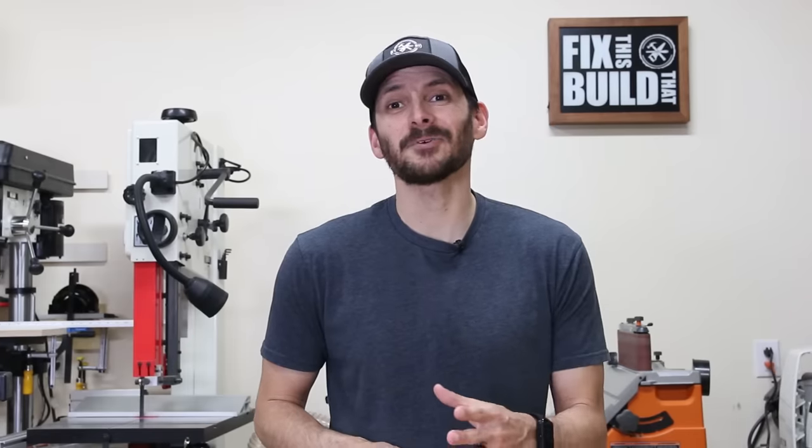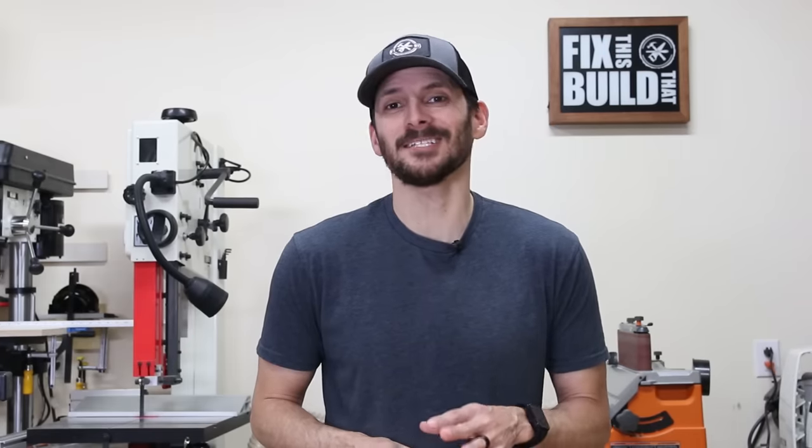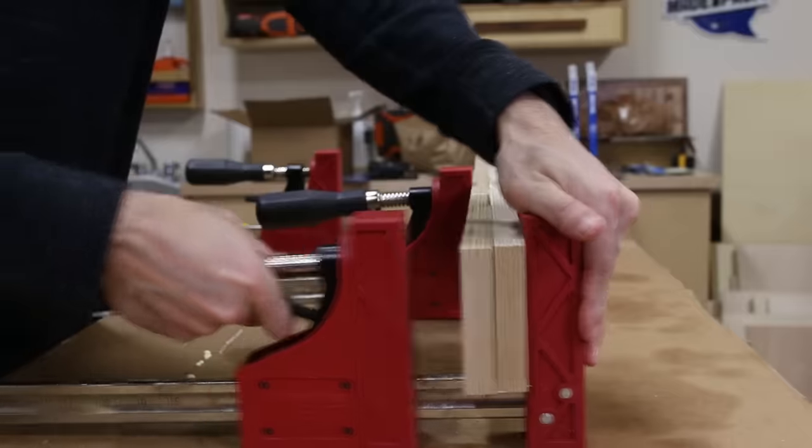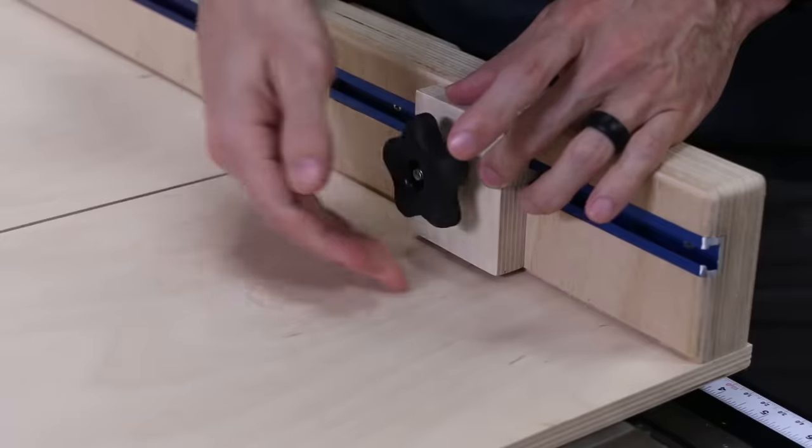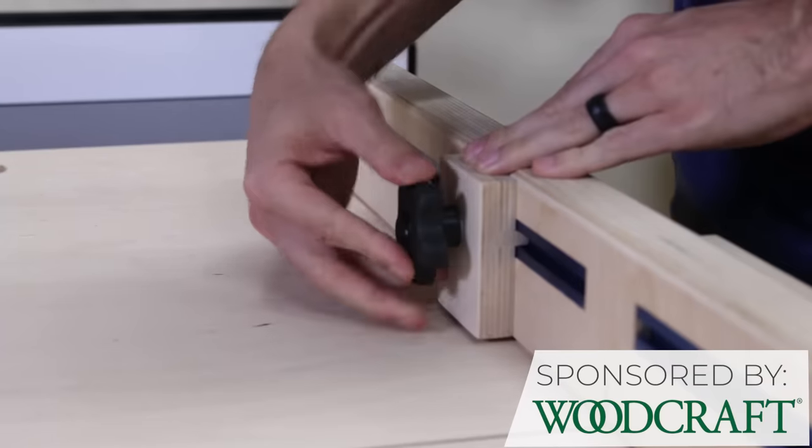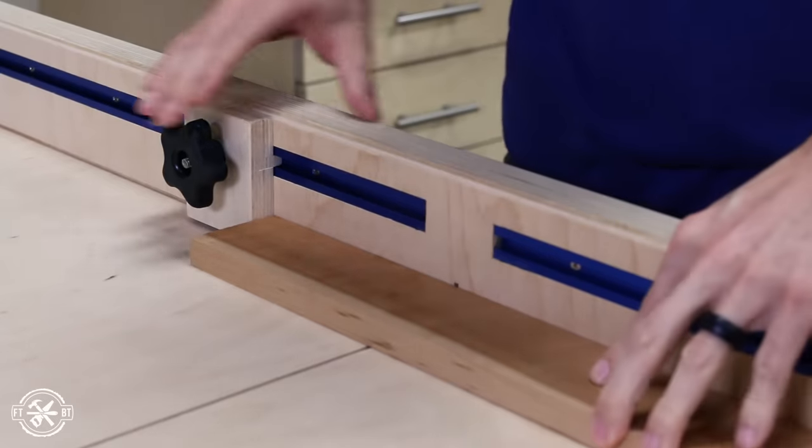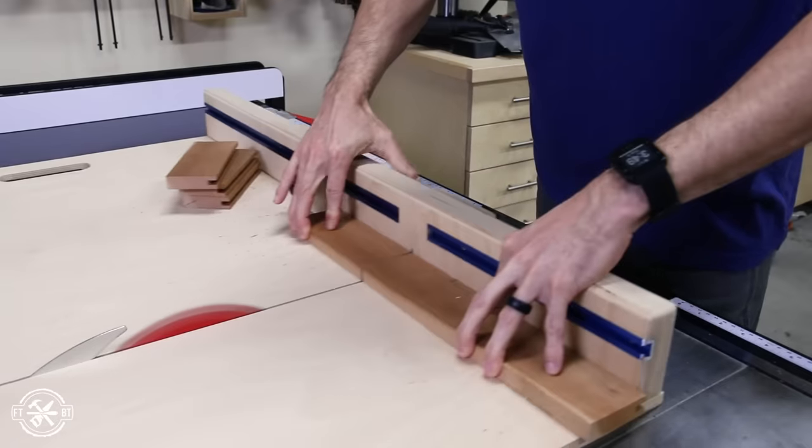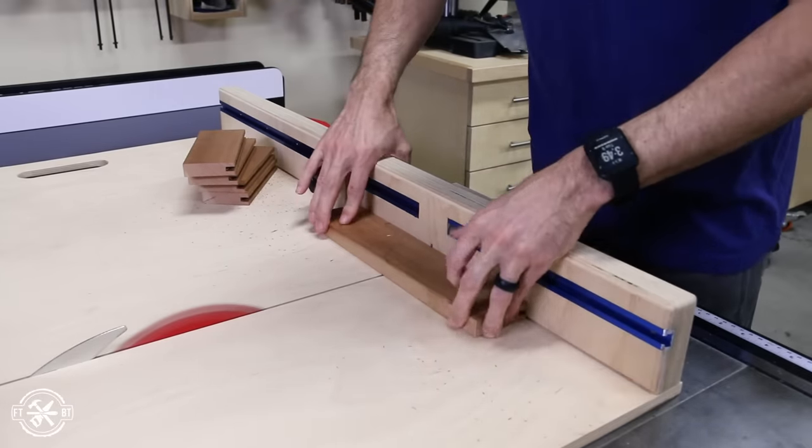Welcome back to Fix This Build That. Today we're going to make a table saw sled with an integrated stop block. A crosscut sled is a must-have jig for the table saw in my opinion. Paired with a stop block, it lets you make repeated cuts with ease. The cuts are clean thanks to a zero clearance slot that's matched with your blade.